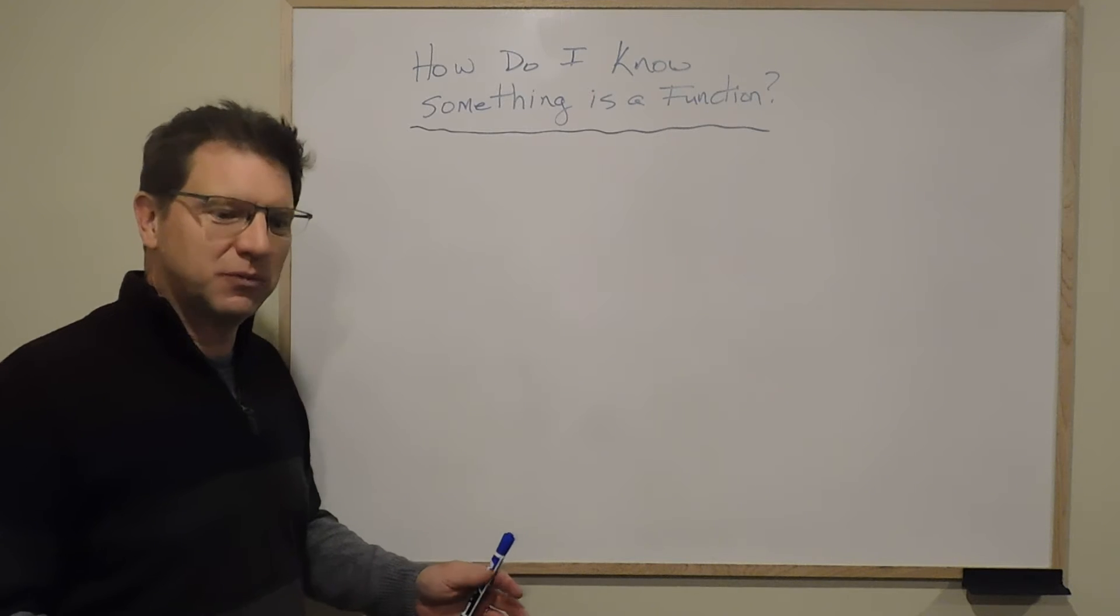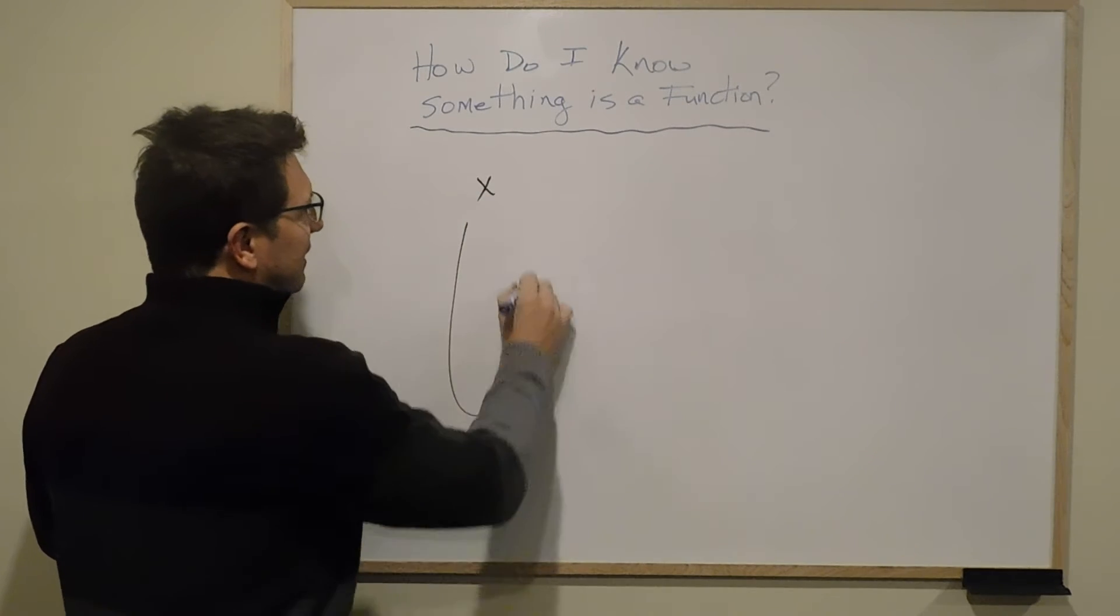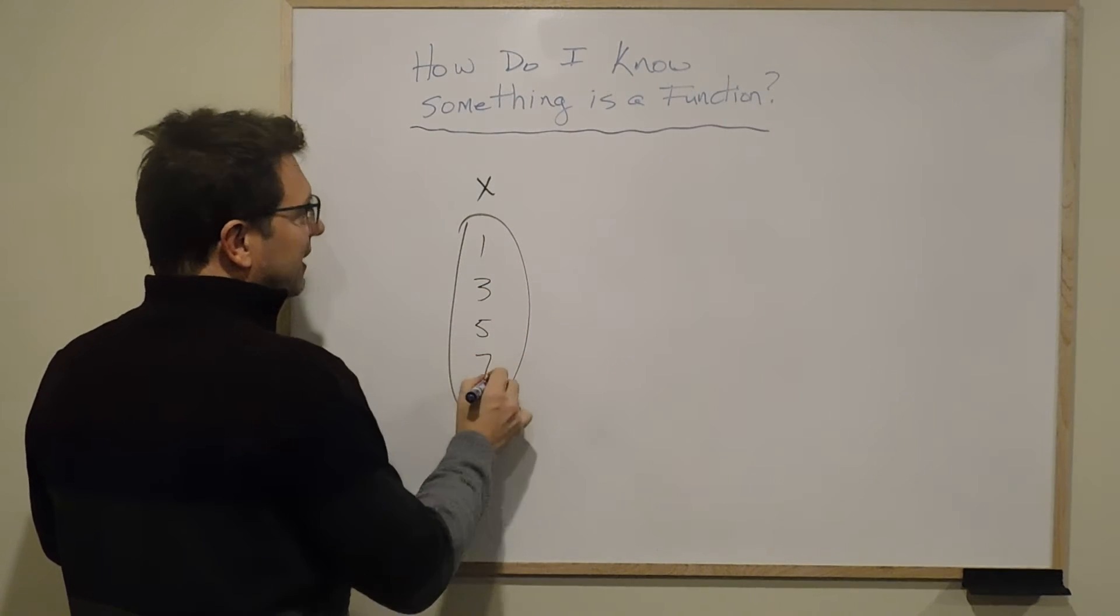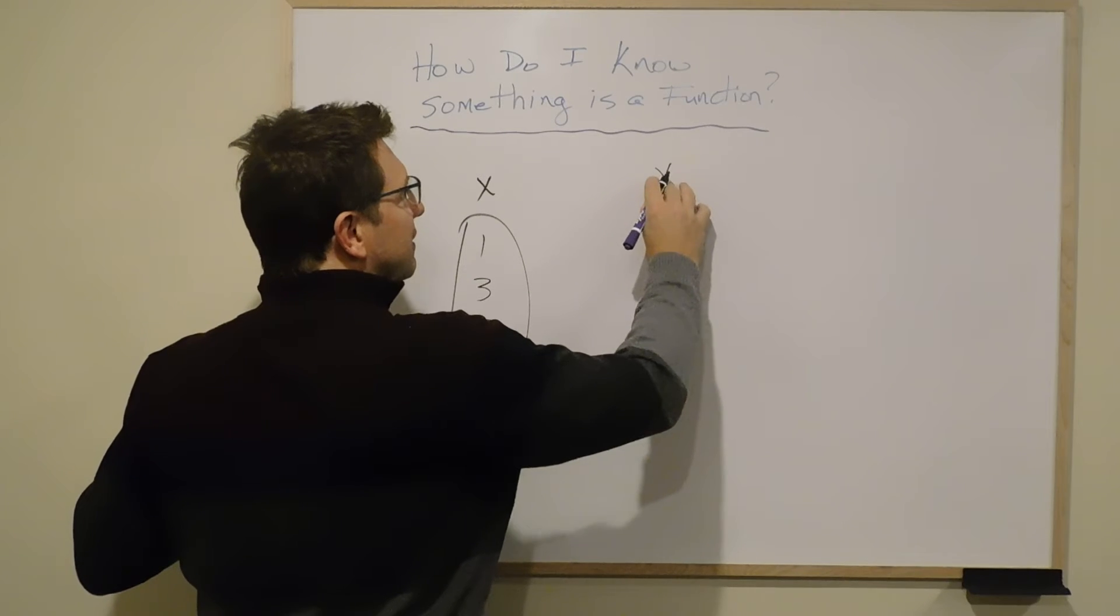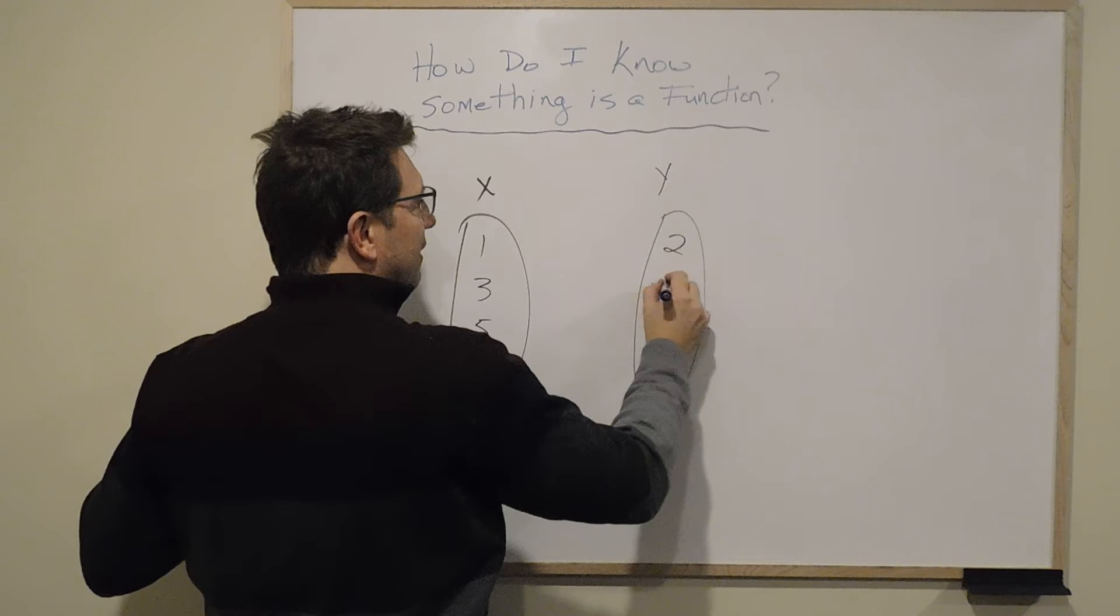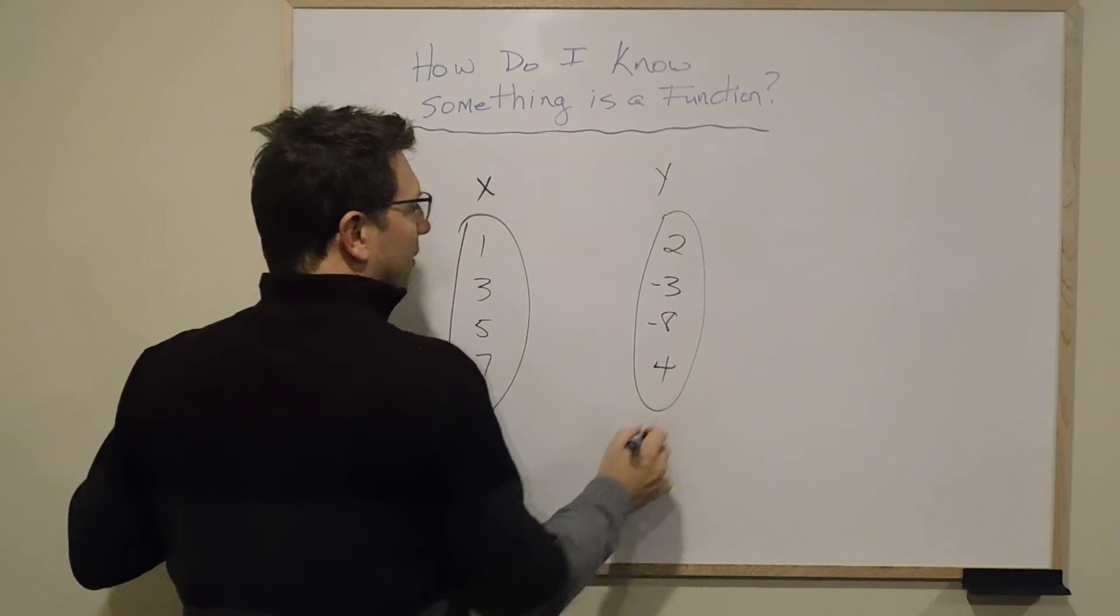Anything can be a relation. So let's do it like this. Let's say x is here, it's like 1, 3, 5, 7, and y is here. And y is like 2, negative 3, negative 8, and 4.